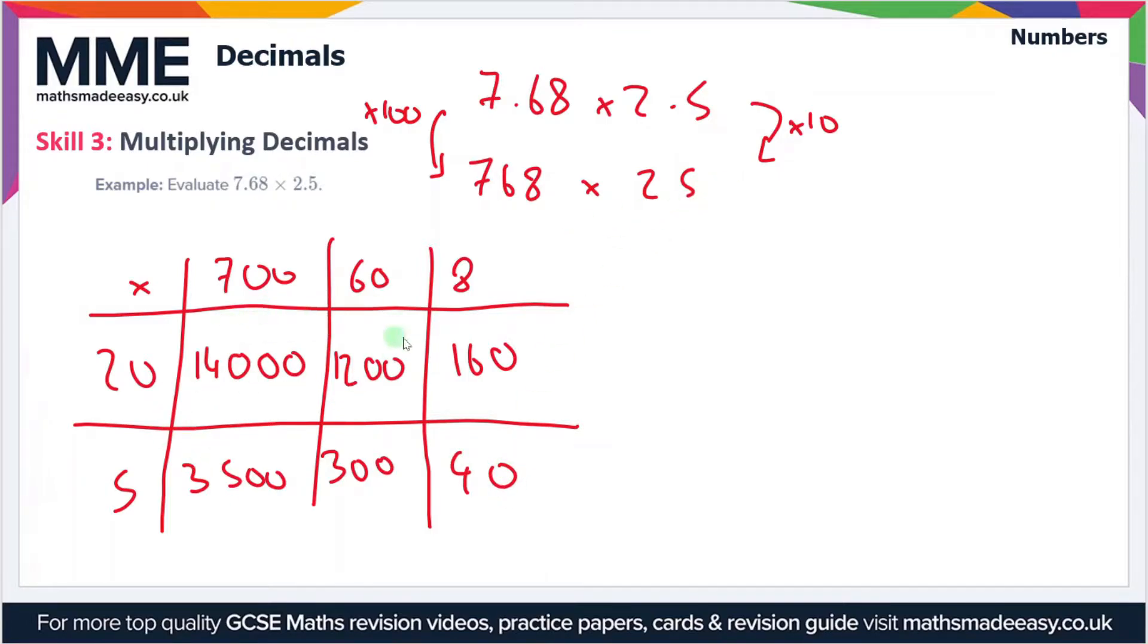So now we just have to add up all of these. We've got 14,000 plus 3,500 plus 1,200 plus 300 plus 160 plus 40. This column sums to zero on the right, we've got 6 and 4 which sums to 10.